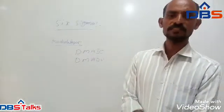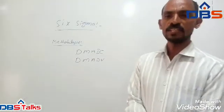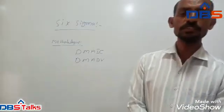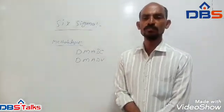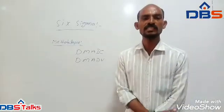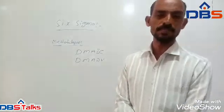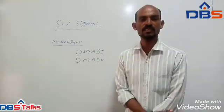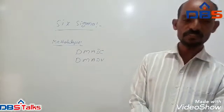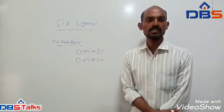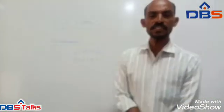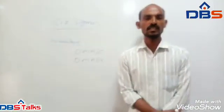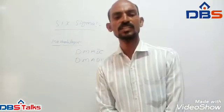Six Sigma identifies several key roles for its successful implementation. Executive leadership includes the support of the CEO and other key top management team members. Champions are responsible for Six Sigma implementation across the organization in an integrated way. Master Black Belts are identified by champions and act as in-house expert coaches for the organization on Six Sigma.